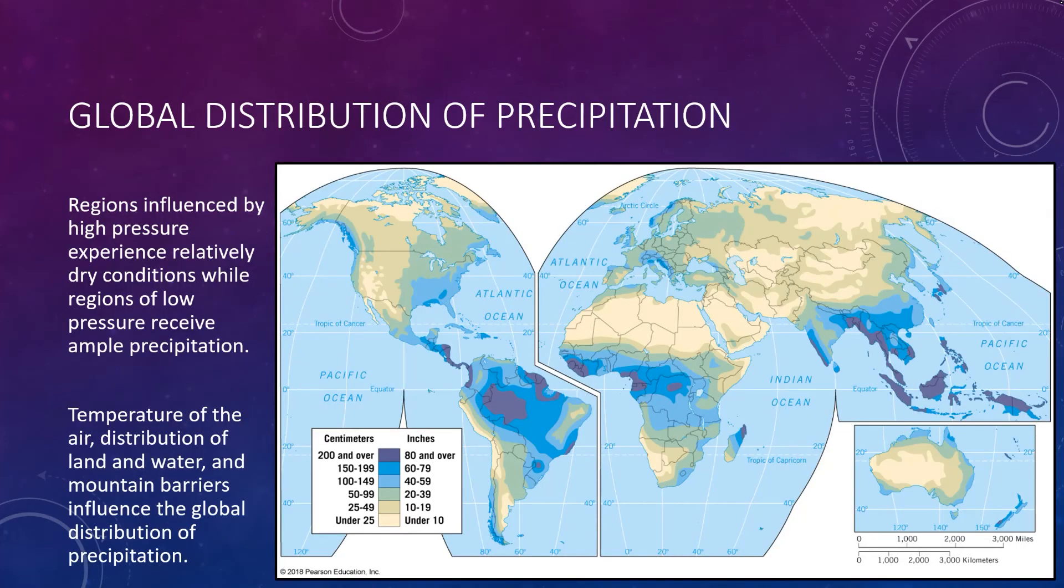So with all of this discussed, we can look at our last topic, the distribution of precipitation. In general, regions influenced by high pressure, with its associated subsidence and diverging winds, experience relatively dry conditions. On the other hand, regions under the influence of low pressure and its converging rising winds receive ample precipitation. So temperature of the air, the distribution of land and water, and mountain barriers can all contribute to the distribution of precipitation around the world. In general, high latitudes receive meager precipitation because cold air cannot hold very much moisture. So the humidity is low and results in low precipitation. But the opposite is true near the equator. Here we have lots of warm, moist air that rises, and so we see lots of precipitation as a result.